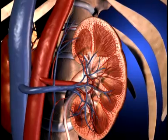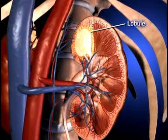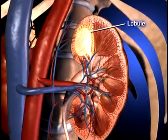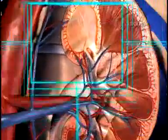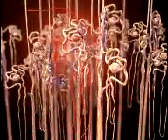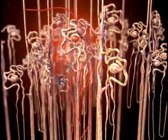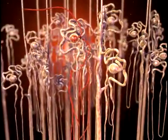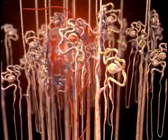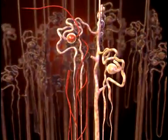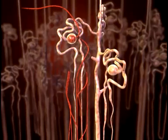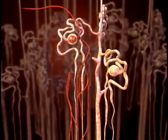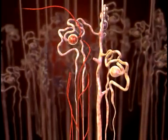The kidney is composed of up to 18 lobes. Each lobe is composed of nephrons. Nephrons are the functional units of the kidney, and each kidney contains more than one million nephrons.